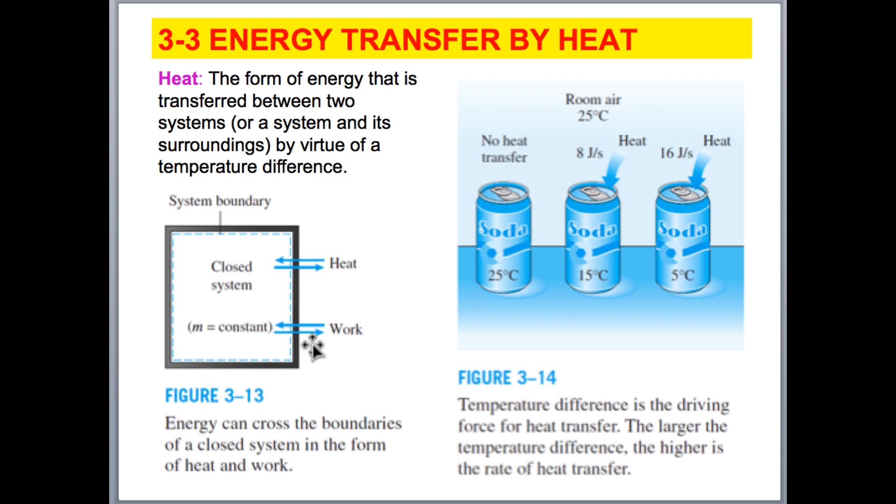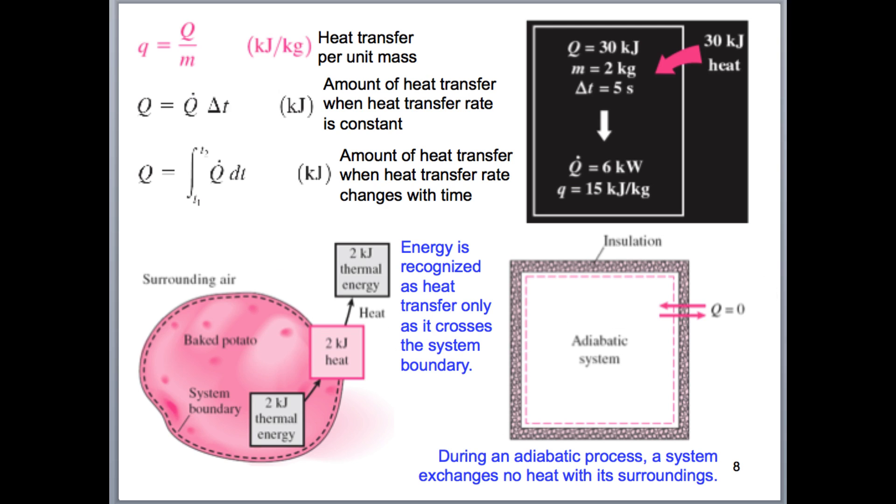So if we have something that is the same temperature, like this soda can, as the room, there's no heat transfer. But if we have something that is different temperature than the surroundings, then we will have heat transfer. Now, the units of heat transfer may be expressed if we're talking about the rate or per unit time. We'll be talking about watts or kilowatts. Otherwise, we'll be talking about joules or kilojoules. And this can be expressed per unit mass. So here we have kilojoules per kilogram, which may be a common expression for us to use.